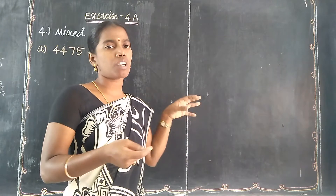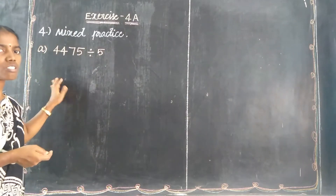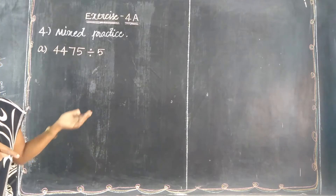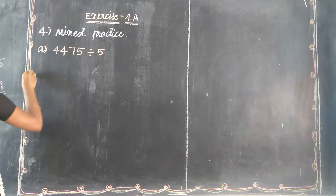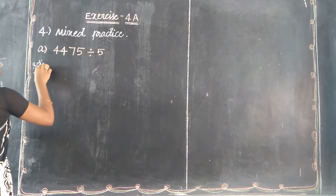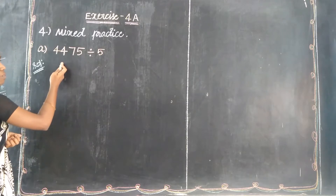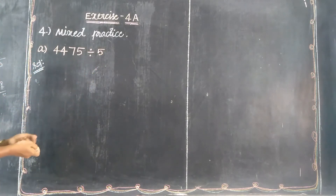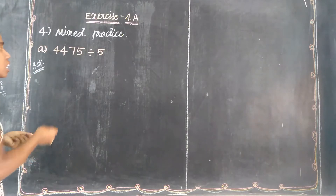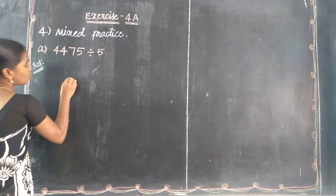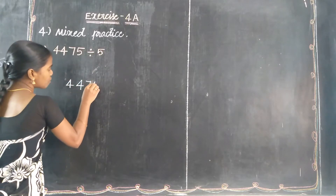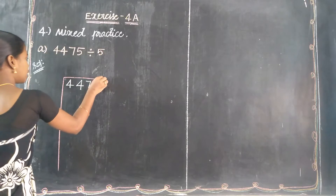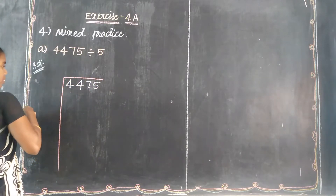This is the 4th Roman — mixed practice — that means 4-digit quotients, 3-digit quotients, and quotients with 0. So the 3rd Roman problem is placed in the 4th one. This is the normal division method. The dividend value is 4,475 and the divisor is 5. This is a single divisor — 1-digit number.